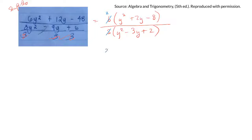So I'm left with 2 times y squared plus 2y minus 8 over y squared minus 3y plus 2. Now, each of these are trinomials, so I can factor them.